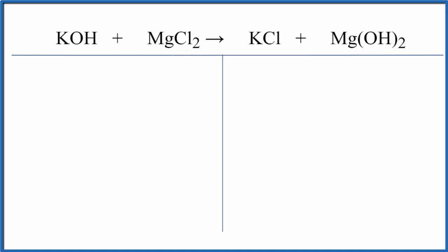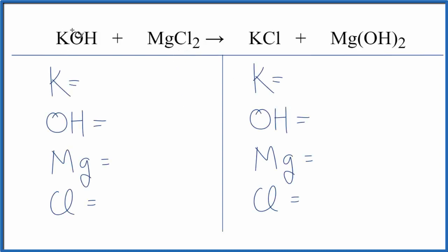Let's count the atoms up on both sides of the equation. So we have one potassium atom, and you'll see I did something here. I have OH together. OH, that's a hydroxide ion, and it stays together. It's a polyatomic ion.